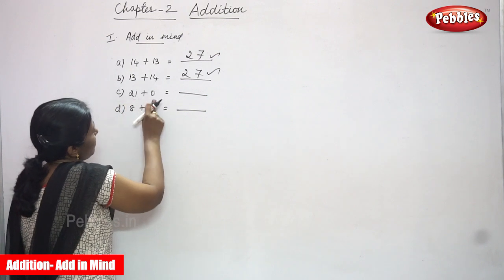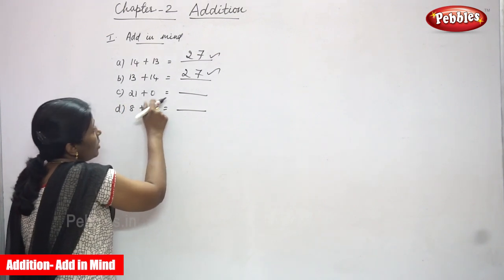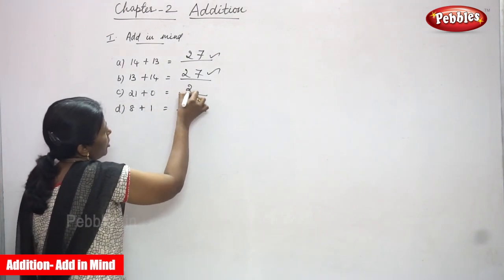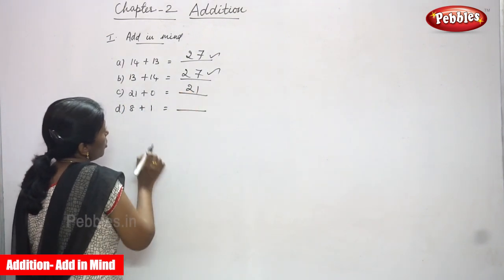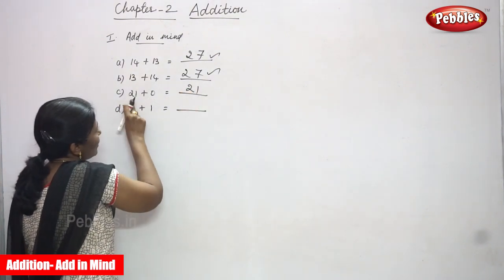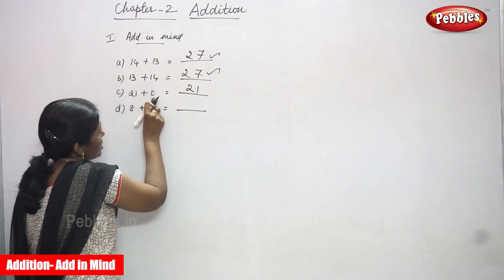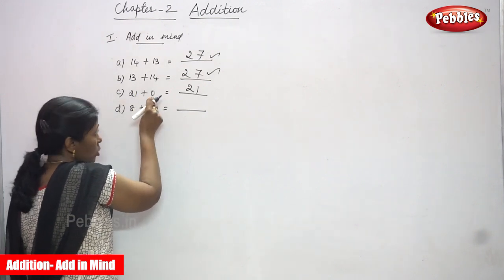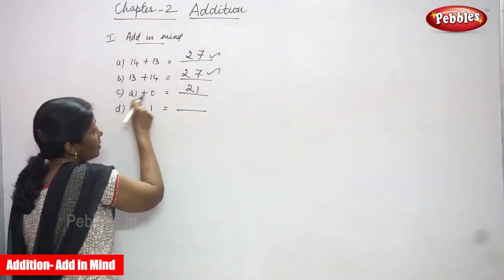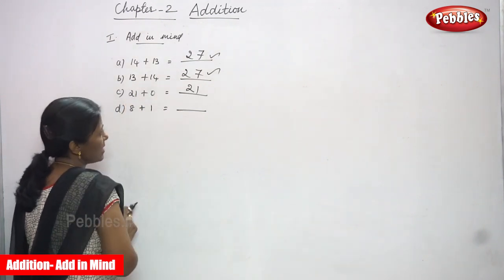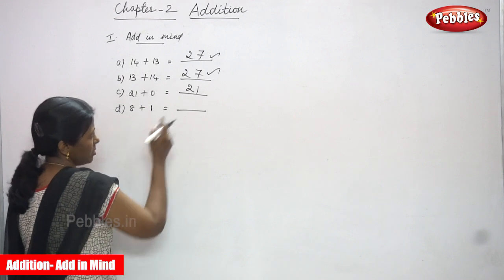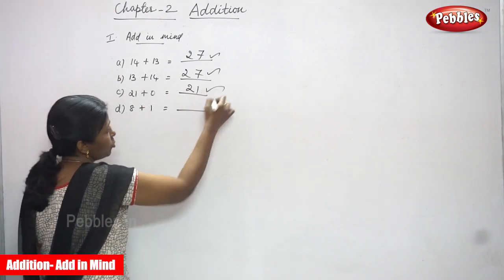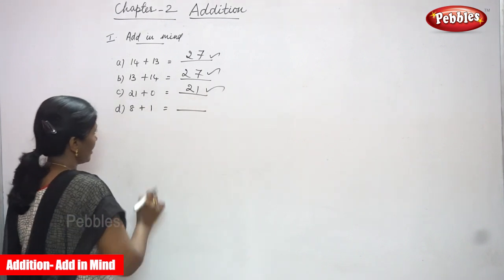The third rule: 21 plus 0. I can get 21. So if you add 0 with any number, you get the same number. This rule is also satisfied.